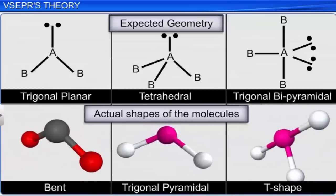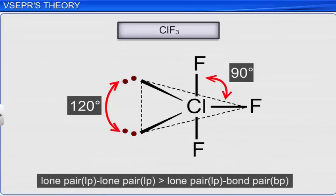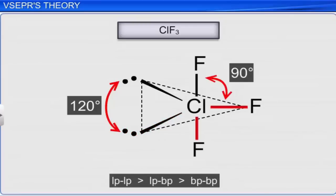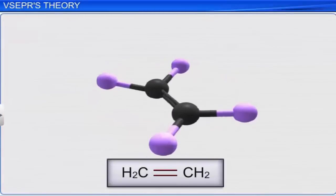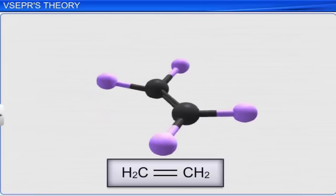In a molecule, the repulsion between lone pairs of electrons is always maximum. We can say that the repulsion between two lone pairs is more than that of a lone pair–bond pair interaction, which is greater than that of two bonded pairs. A multiple bond is assumed to be a single electron pair; therefore, the presence of multiple bonds will not affect the shape of a molecule.